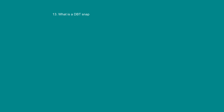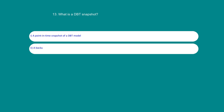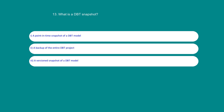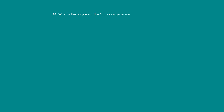What is a dbt snapshot? Option 1: A point in time snapshot of a dbt model. Option 2: A backup of the entire dbt project. Option 3: A version snapshot of a dbt model. Option 4: A summary of the dbt project statistics. The answer is 3: A version snapshot of a dbt model.